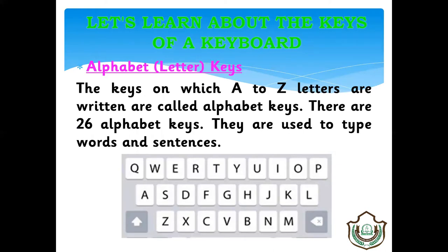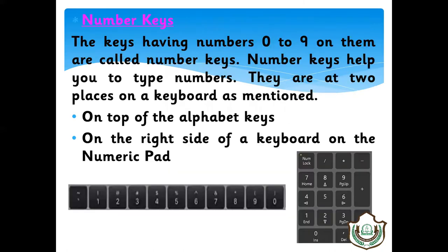Let's learn about the keys on the keyboard. Alphabet keys — inhe letter keys bhi bolte hain. A to Z letters hote hain, isliye the keys on which A to Z letters are written are called alphabet keys. There are 26 alphabet keys. They are used to type words and sentences — isse hum words aur sentences type kar sakte hain, apna naam type kar sakte hain.